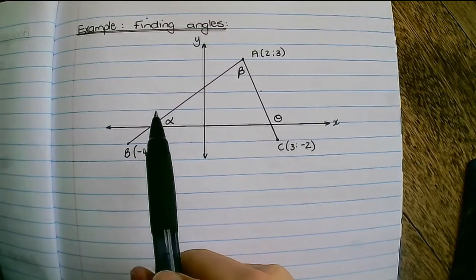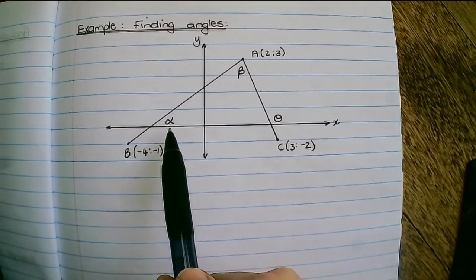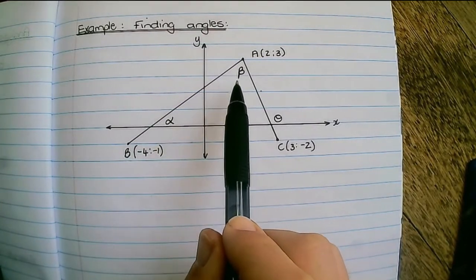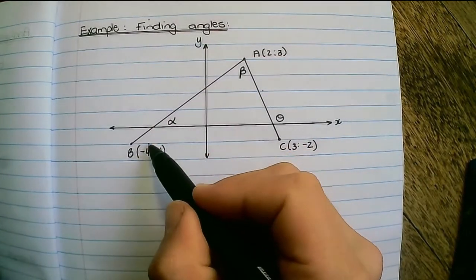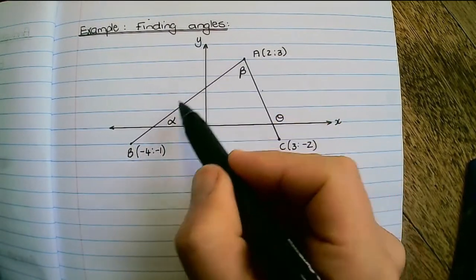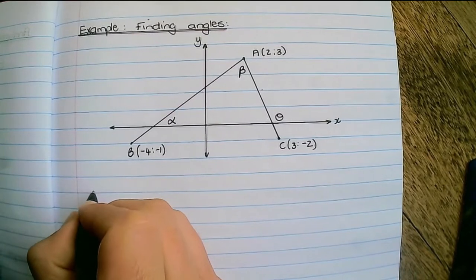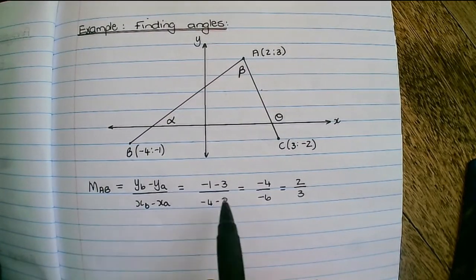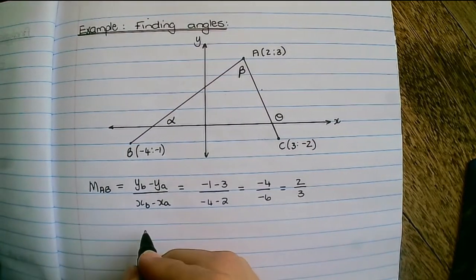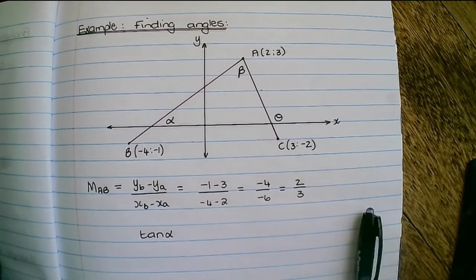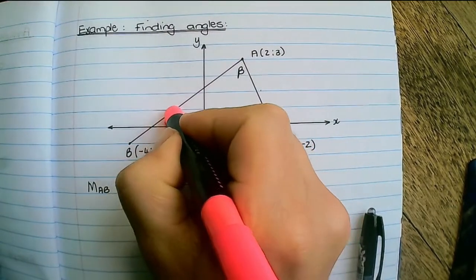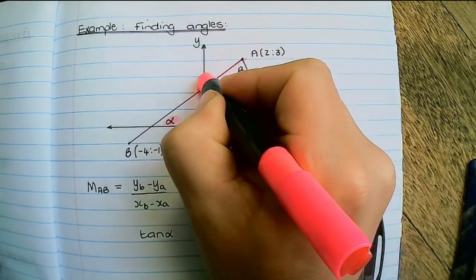So in this example we are going to solve all three angles alpha, beta and theta. First we can find the gradient of line AB. So the gradient of line AB is 2 over 3. Therefore the tan of alpha, so you see alpha is connected to the line AB.